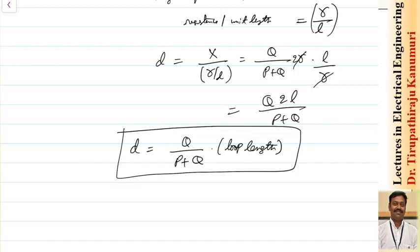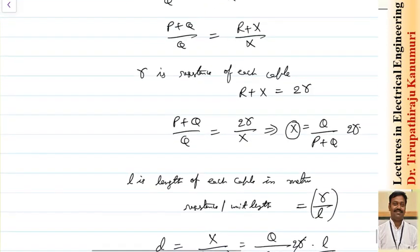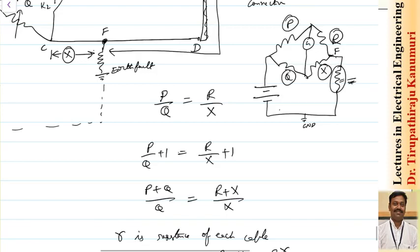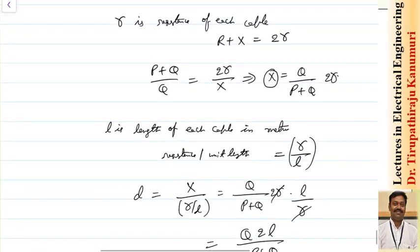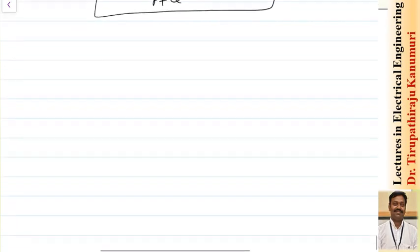This measurement method is most commonly used because the fault resistance is not considered within the Wheatstone bridge — it does not affect the bridge balance. So it measures the exact length of the cable where the fault is happening; that is a major advantage. However, since fault resistance is included in the battery circuit, it affects how much current is supplied by the battery, making the bridge less sensitive. You may need to vary the resistors more to achieve balance, but under balance conditions the value will be accurate.